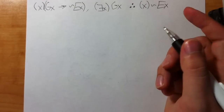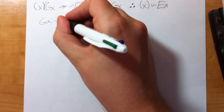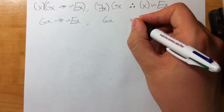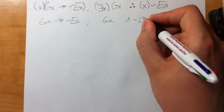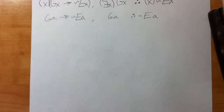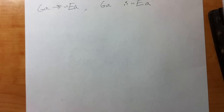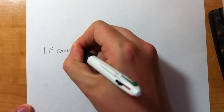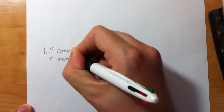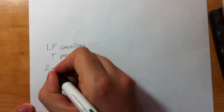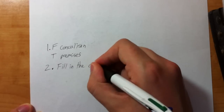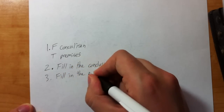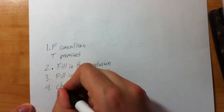We do a one-element expansion first — that's how you start every time. So the first premise expands to GA arrow tilde EA, and the conclusion is just tilde EA. Now we do a truth table. There are four steps: step one, make the conclusion false and make the premises true; step two, fill in the conclusion; step three, fill in the parentheses; step four, check your work.